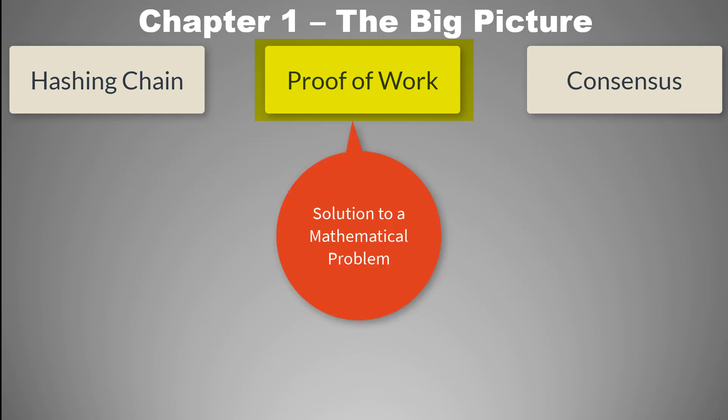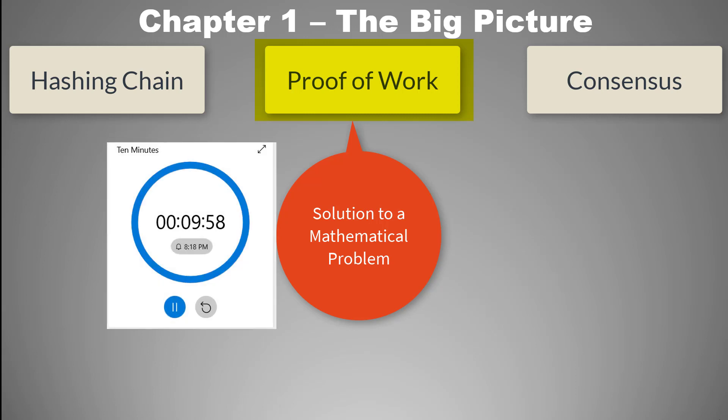This problem is called proof of work. The difficulty of proof of work is adjusted in such a way that it will take approximately 10 minutes to get the solution. So no matter how fast you create a block and new hash, you also need to establish proof of work, which is a time-consuming process.